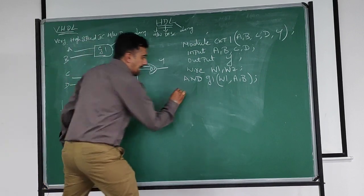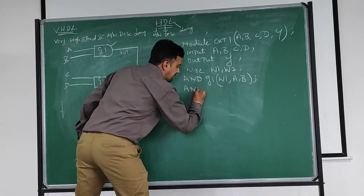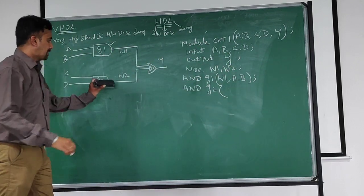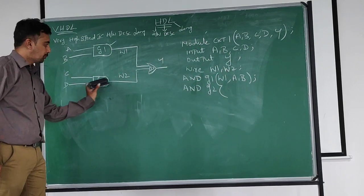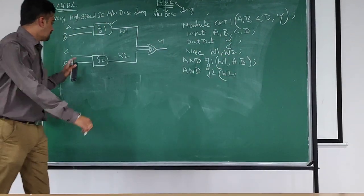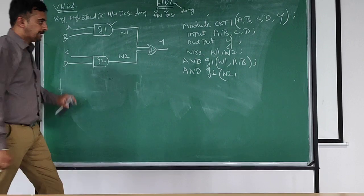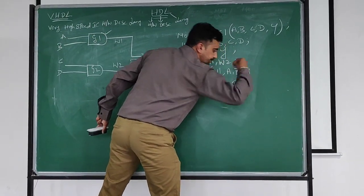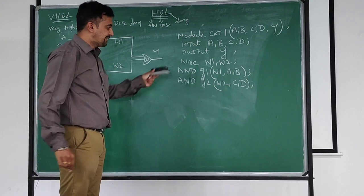And gate 2, open brace. What is the output for gate 2? W2 is the output. That is Y correction. W2 is the output. Comma, there are two inputs, that is C, comma, D. This is very easy.